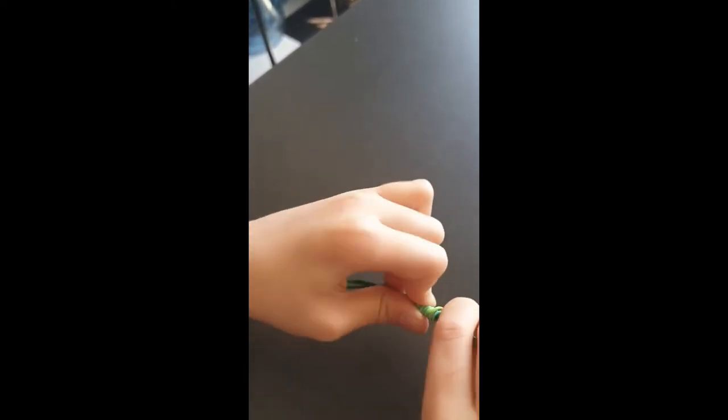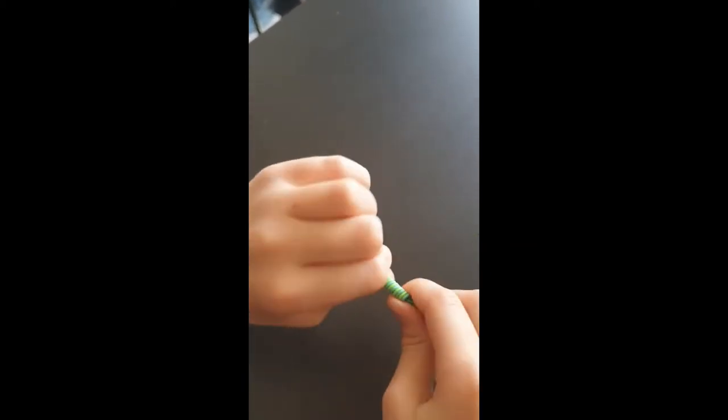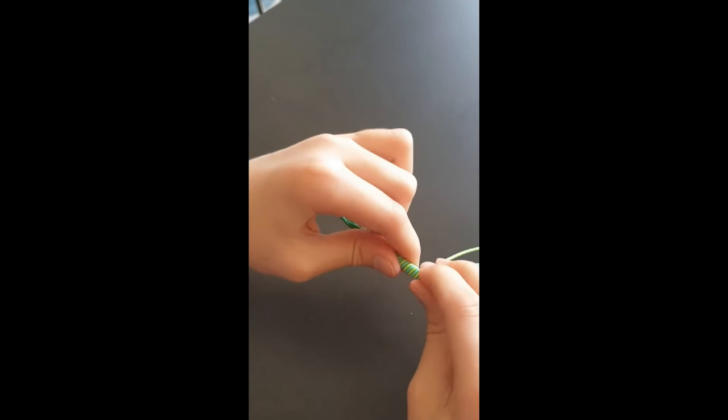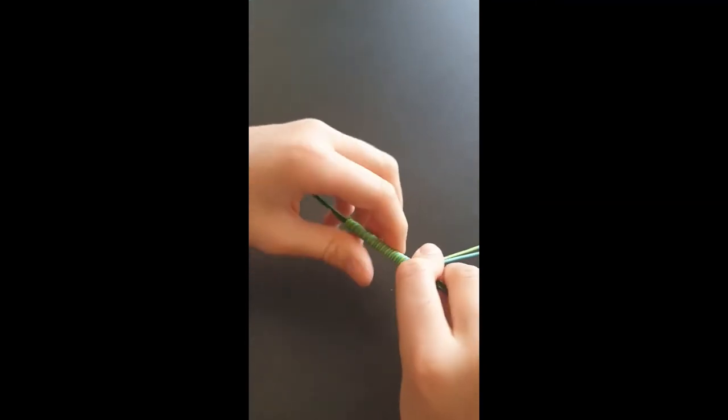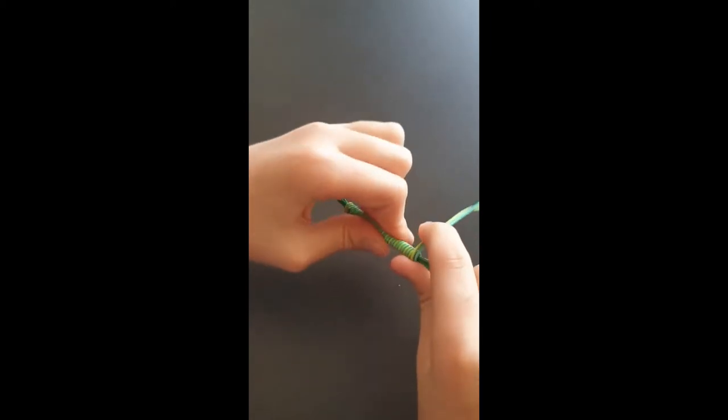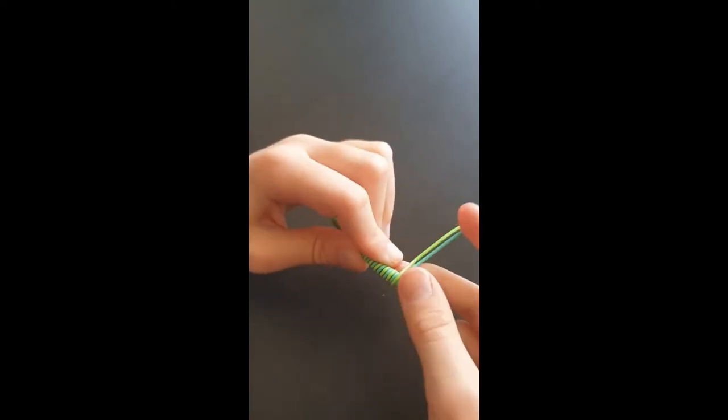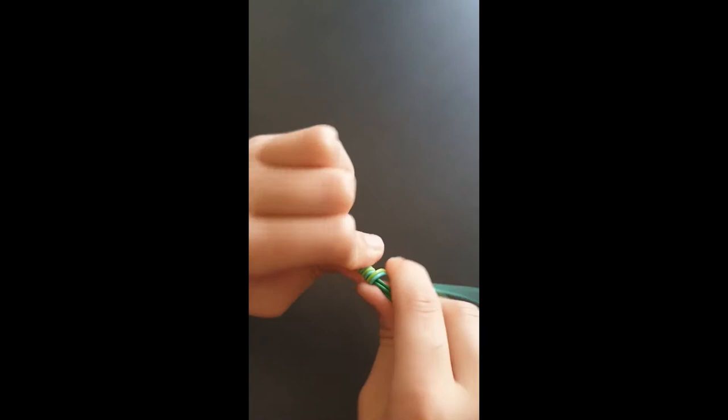So you're kind of twisting the base piece really and then just pushing down the wires. How long does it take to make the bracelet? Well, it depends how fast you are at it. I'm quite fast because I've done it before. If it's your first time making it, maybe like 10 minutes, five minutes. It depends how fast you are at it.